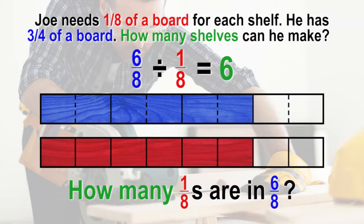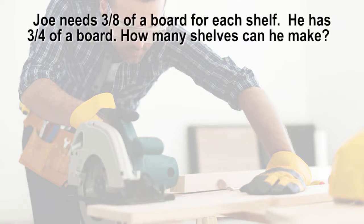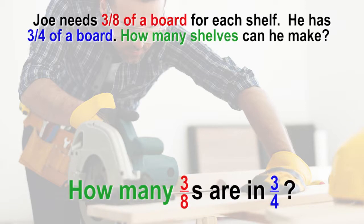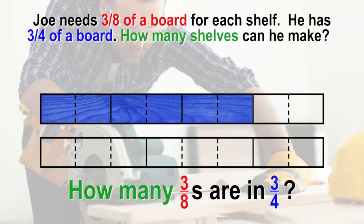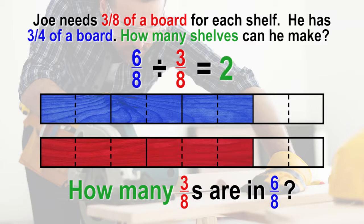We could continue the same strategy to a problem that doesn't contain a unit fraction. What if the problem read, Joe needs 3/8 of a board for each shelf? He has 3/4 of a board. How many shelves can he make? The question would be, how many three-eighths are in three-fourths? We can use the same bars, but instead of coloring in 1/8, we would color in 3/8. The common unit is eighths, and the answer to our problem would be, Joe can make two shelves with 3/4 of his board.